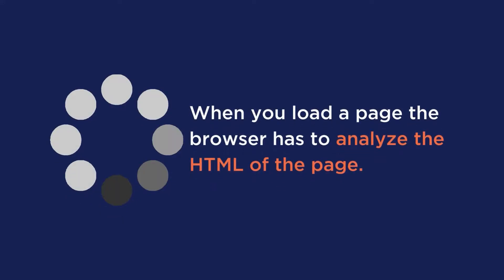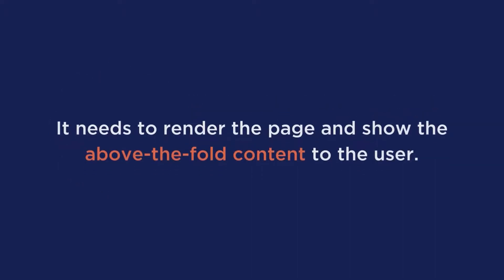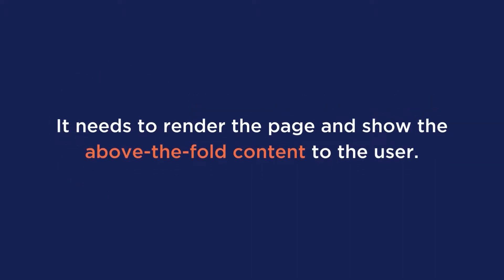Think of tracking codes for Google Analytics — that is a render blocking resource. To break this down even more, when you load a page, the browser has to analyze the HTML of the page. It needs to render the page and show the above-the-fold content to the user. But if the browser encounters JavaScript and CSS, it has to download and analyze those files too, which means the page takes longer to load. So when you boil it down, render blocking resources delay the page load for no valid reason.